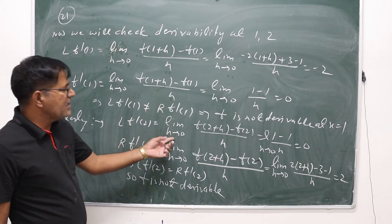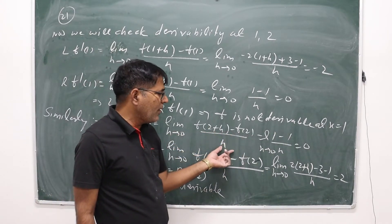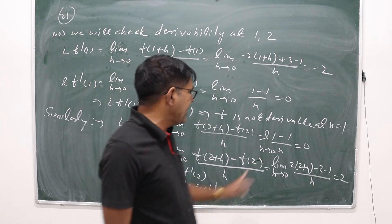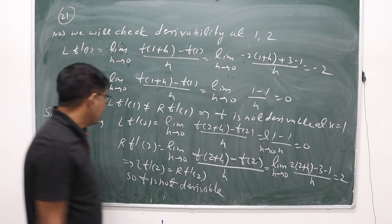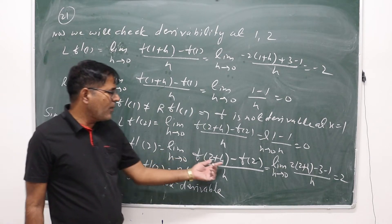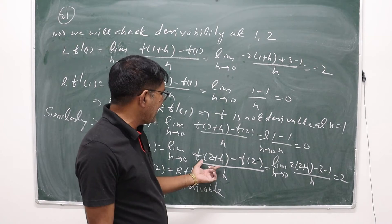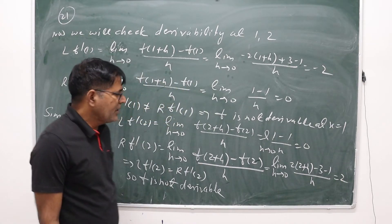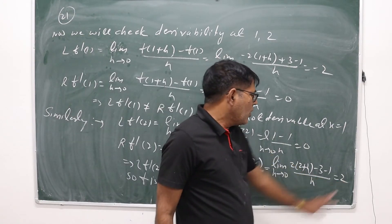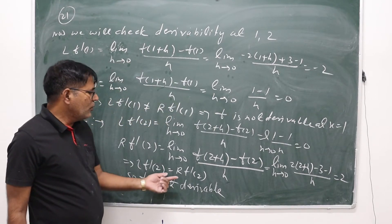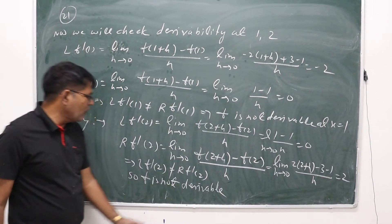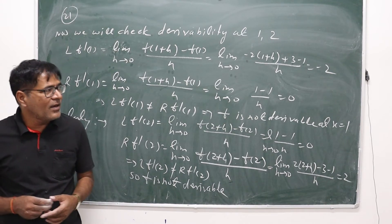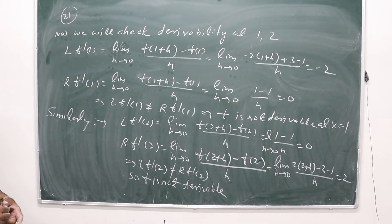Checking differentiability at x = 2: LHD = limit as h→0 of [f(2+h) - f(2)] / h, where f(2+h) = 1 and f(2) = 1 (approaching from left), so LHD = 0. RHD = limit as h→0 of [f(2+h) - f(2)] / h, where f(2+h) = 2(2+h) - 3, giving RHD = 2. Since LHD ≠ RHD, f is not differentiable at x = 2. Therefore, the function is not derivable at exactly x = 1 and x = 2.